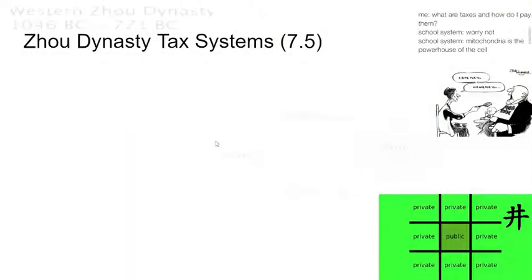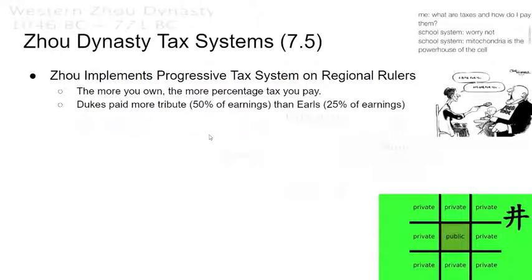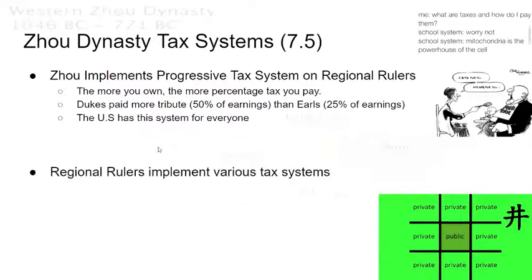Zhou dynasty tax system — section 7.5. Zhou implements what is known as a progressive tax system on regional rulers: the more you own, the higher percentage of tax you pay. Dukes paid 50% of what they earned, compared to Earls who paid around 25%. The U.S. has this progressive tax system for everyone as well. The regional rulers would then implement various tax systems for the people that they governed.